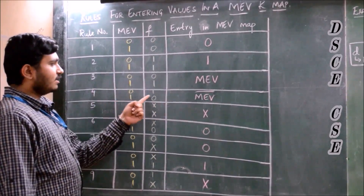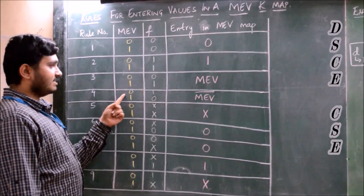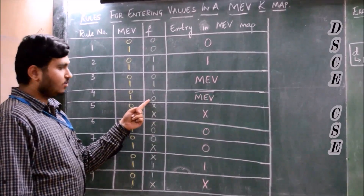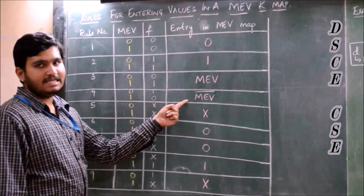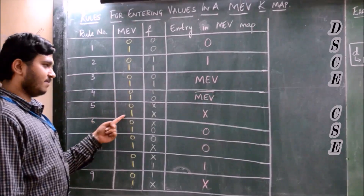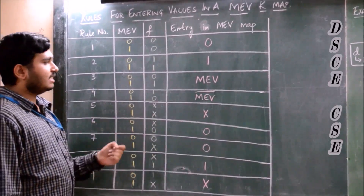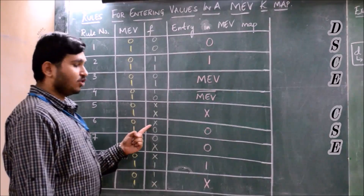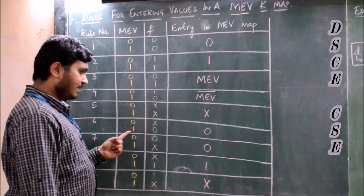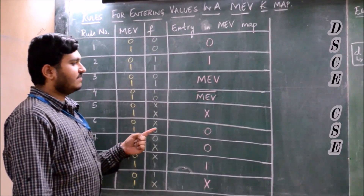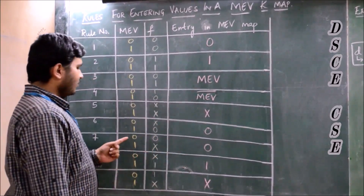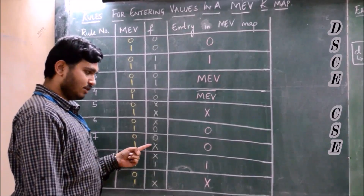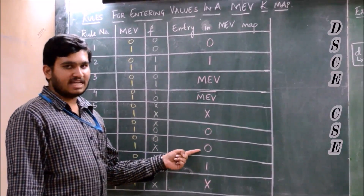If the function output is the complement of the MEV — that is, when MEV is 0 the output is 1, and when MEV is 1 the output is 0 — then we enter MEV-bar (MEV complement) in the map. For both values of MEV, if the functional output is a don't-care condition, we enter don't-care. If MEV=0 gives don't-care and MEV=1 gives 0, we enter 0. Similarly, if MEV=0 gives 0 and MEV=1 gives don't-care, we also enter 0.